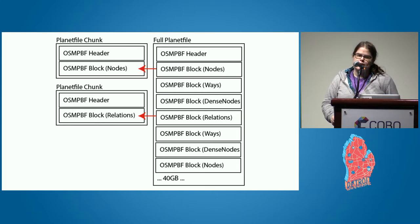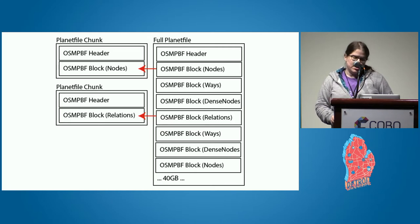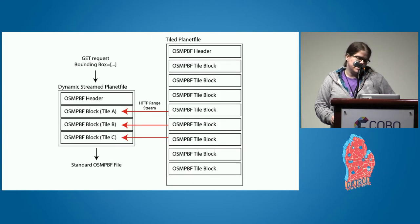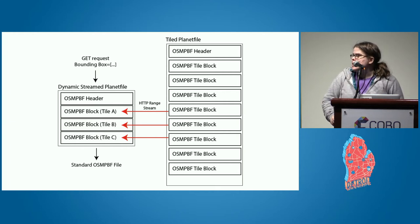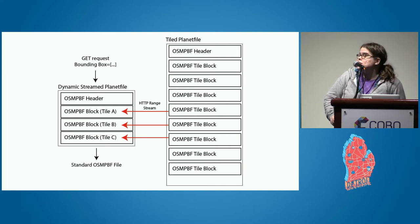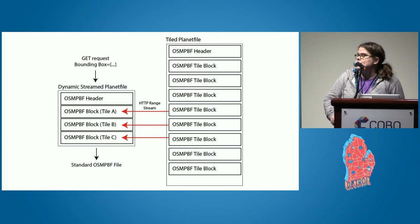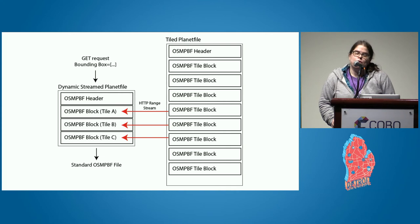Instead of having to sit and download a 40 gigabyte file, you could theoretically start with the first chunk, pre-download the next chunk while you're importing, and get some concurrency going if you disabled the Postgres constraints. Working on this, I've been thinking: perhaps if we organize this primitive data format into something tile-based and provided an index — just the byte-level index for random access — we could actually have dynamic streaming based on a bounding box to return that region with no processing whatsoever.